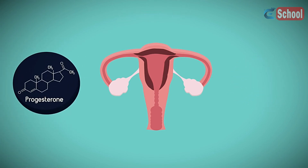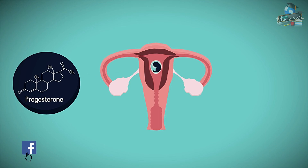Progesterone is another hormone secreted by your ovaries and works to maintain the uterus lining thickened by oestrogen. This continues to occur even during pregnancy, so as to support the growing fetus.